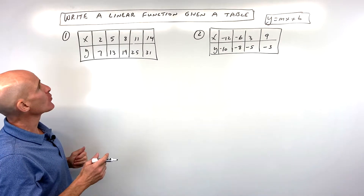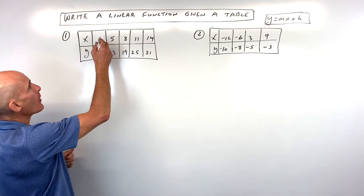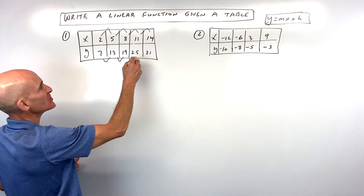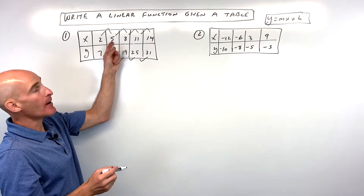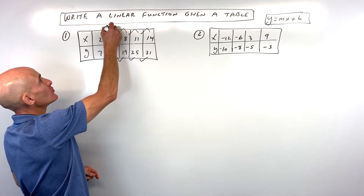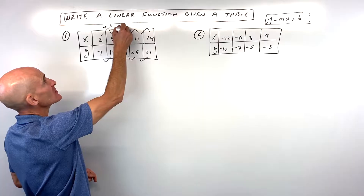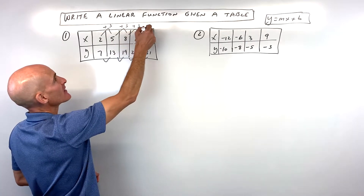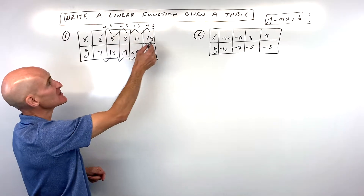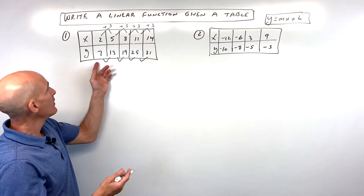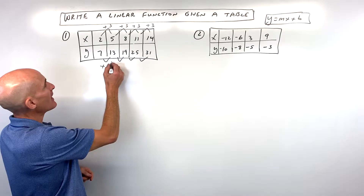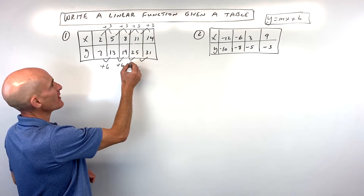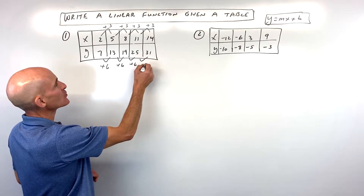In example number one, I want to figure out how are the x values changing and how are the y values changing. See how we're going up by three: two plus three is five, five plus three is eight, eight plus three is eleven, and eleven plus three is fourteen. So the x's are increasing by three. The y's look like they're increasing by six — nineteen minus thirteen is six, twenty-five minus nineteen is six. So it keeps going up by six.